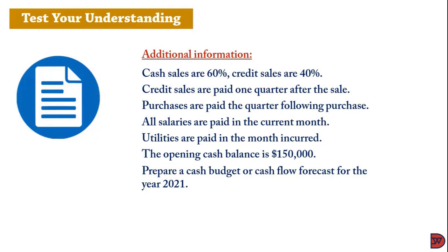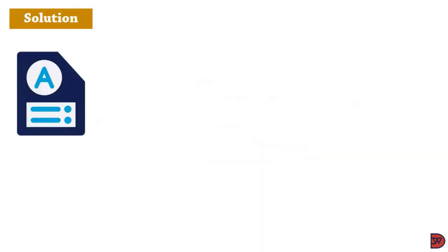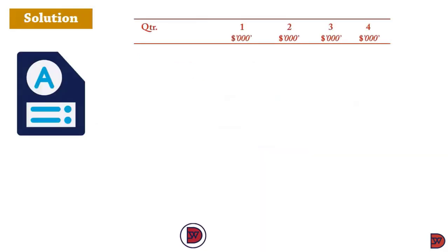Additional information: cash sales are 60% of total sales, so the remaining 40% are credit sales, which are paid one quarter after the sale. Purchases are also paid the quarter following the purchase. All salaries are paid in the current period, and utilities are paid in the month incurred. The opening cash balance is 150,000. We need to prepare the cash budget for 2021.